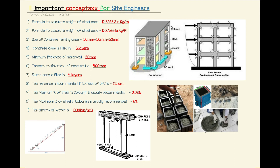At number five, the minimum thickness of a shear wall is 150 mm and the maximum thickness is 400 mm. We have a diagram showing the columns, slabs, beams, RC wall, and foundation. The shear wall is usually located in the middle of the structure for stability, strength, and proper symmetry.